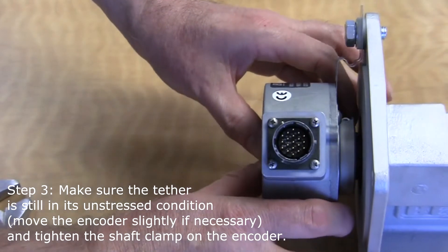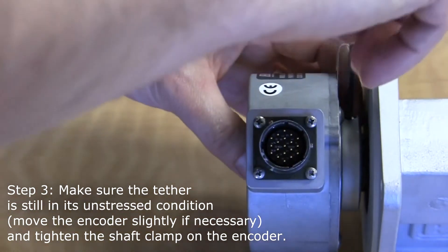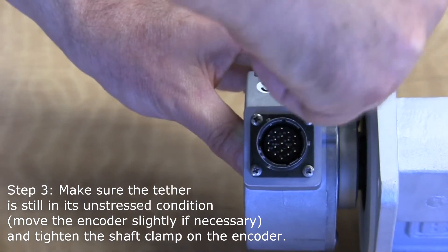Make sure that the tether is still in its unstressed condition, move the encoder slightly if necessary, and tighten the shaft clamp on the encoder.